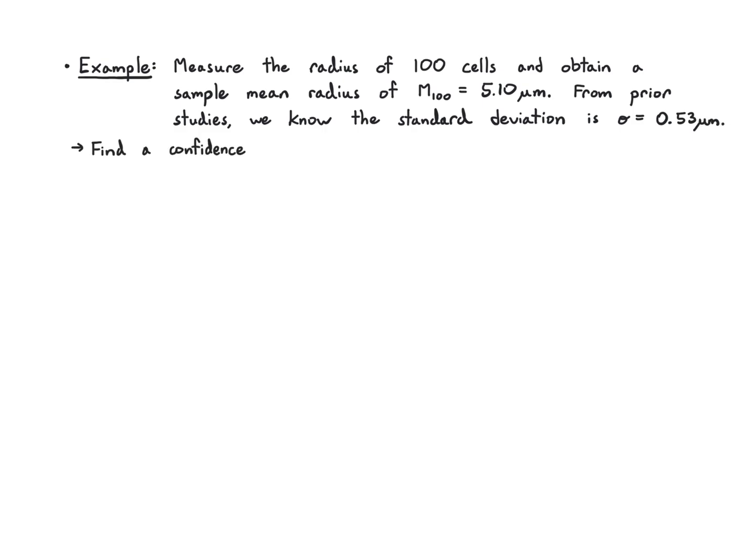So what I want to do is find a confidence interval for the mean with confidence level 0.95. That means I want to give an interval for the mean, and I want the probability that the sample mean plus and minus epsilon captures the true mean with probability 0.95.